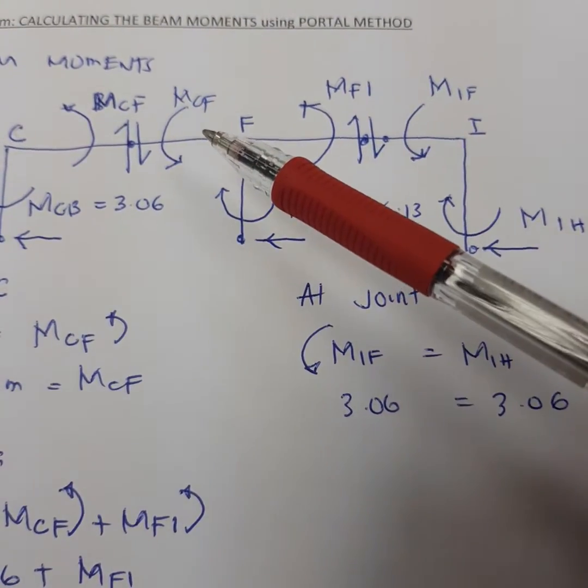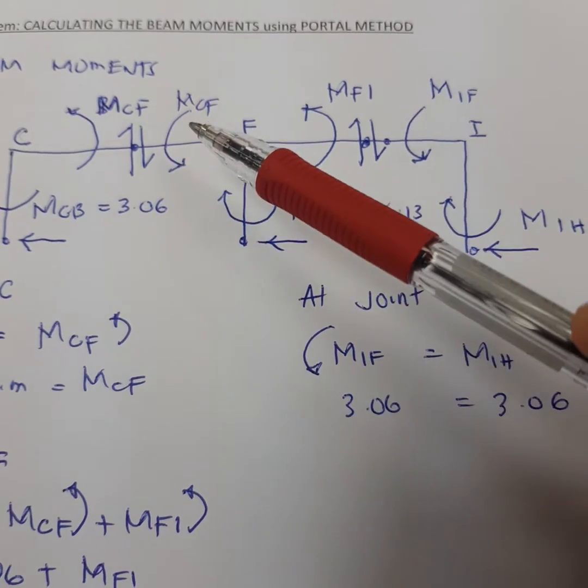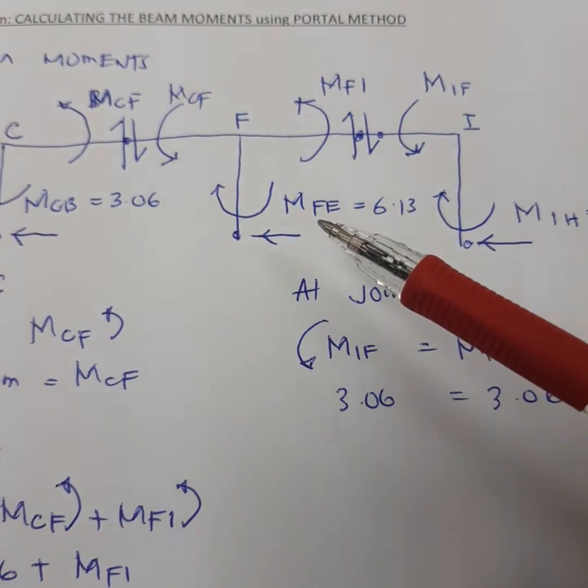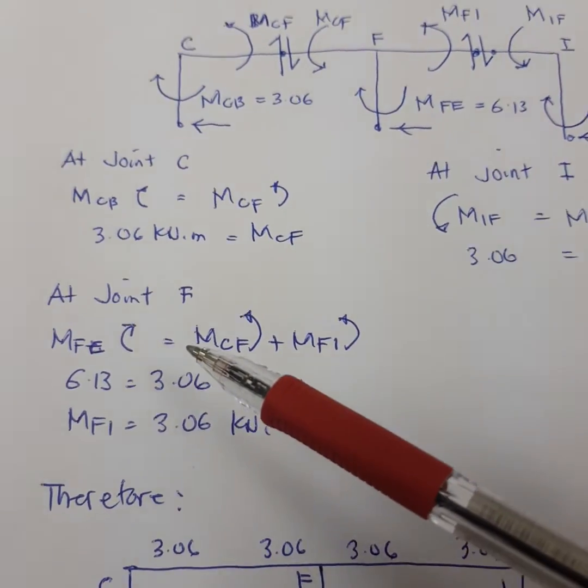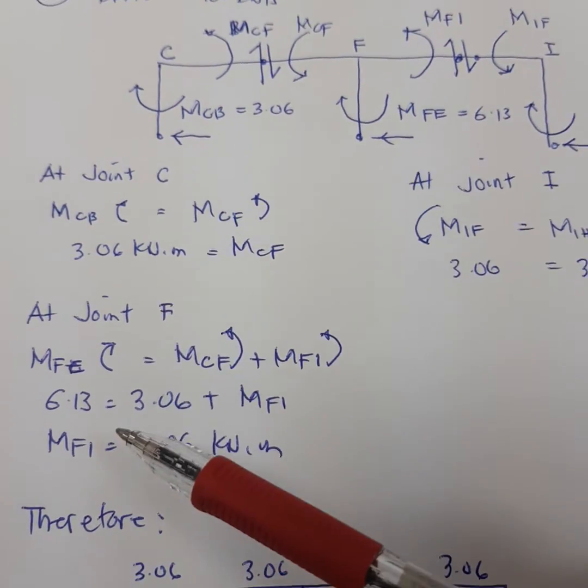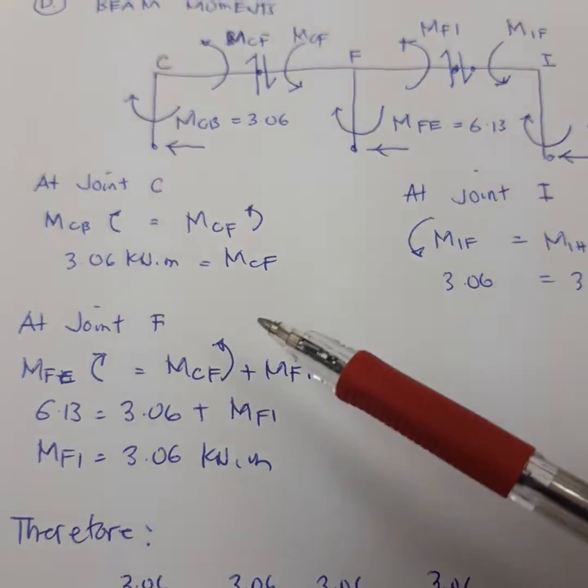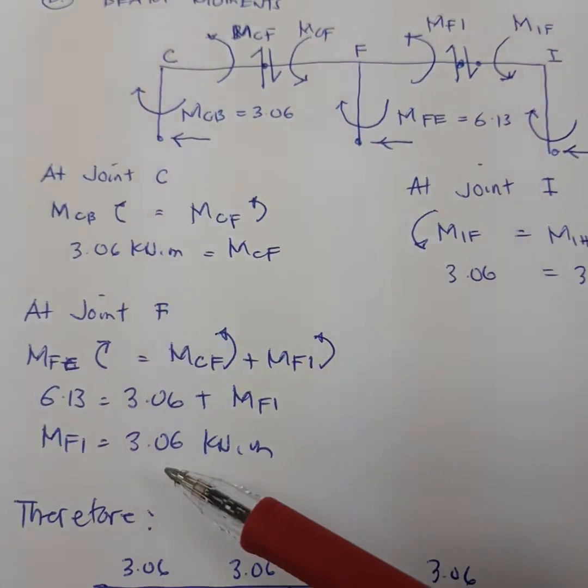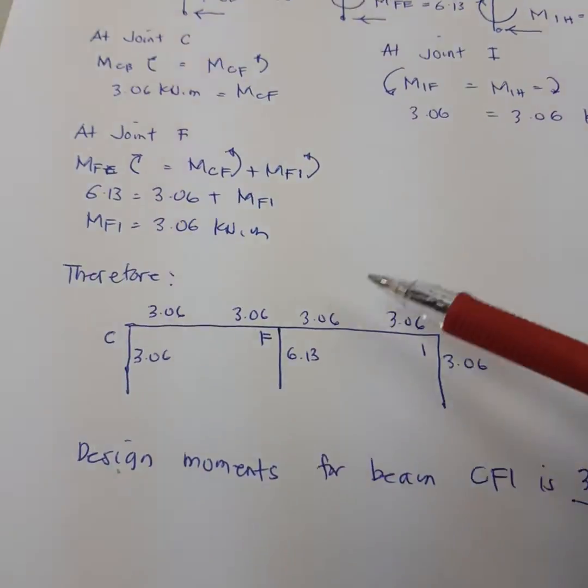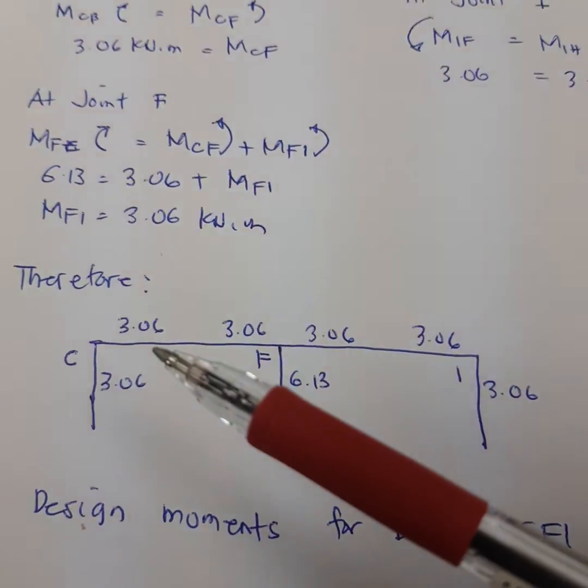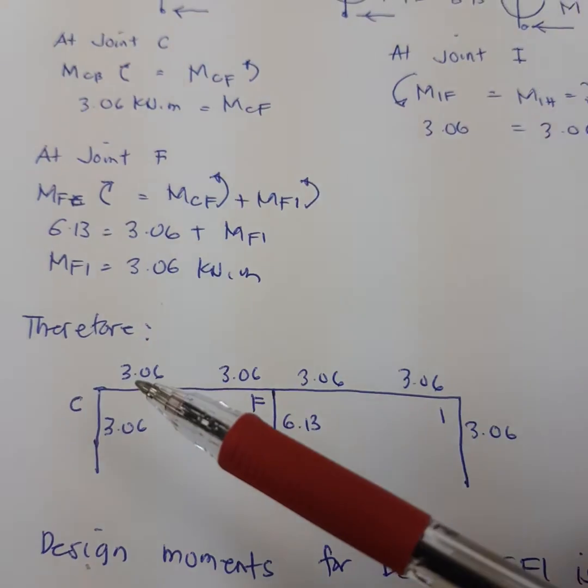FE is already computed before, so FI you can compute using this equation. Clockwise direction is equal to counterclockwise direction. Thus we have this moment FI also with joint I, and similar calculation with the next floor.